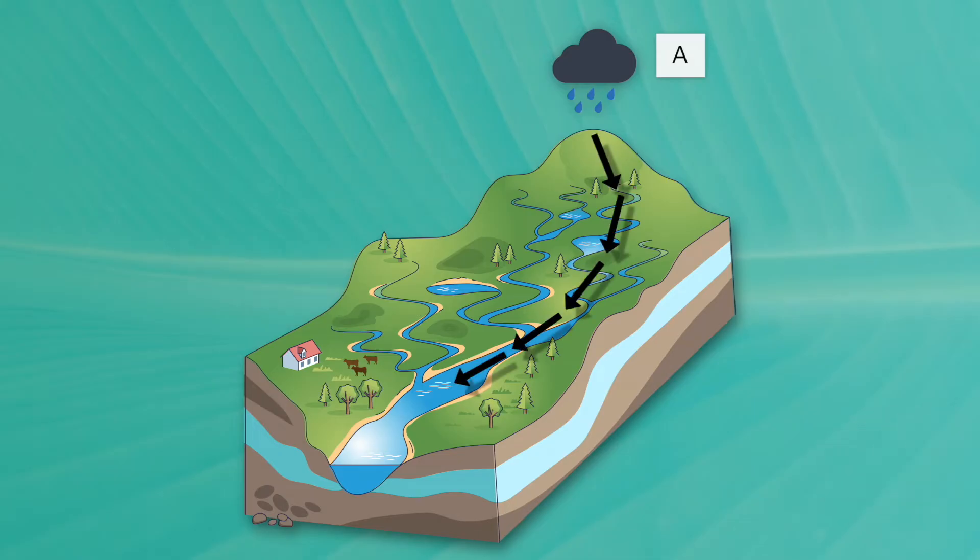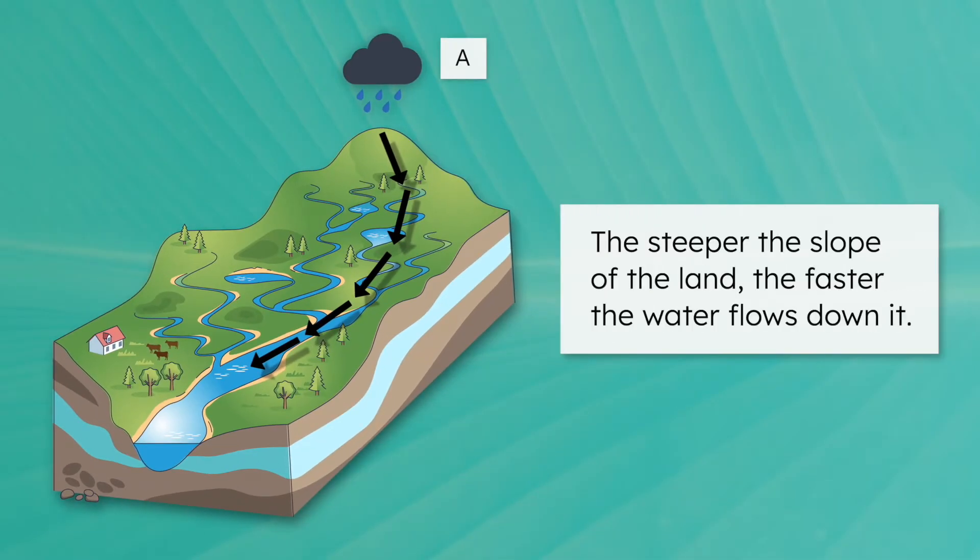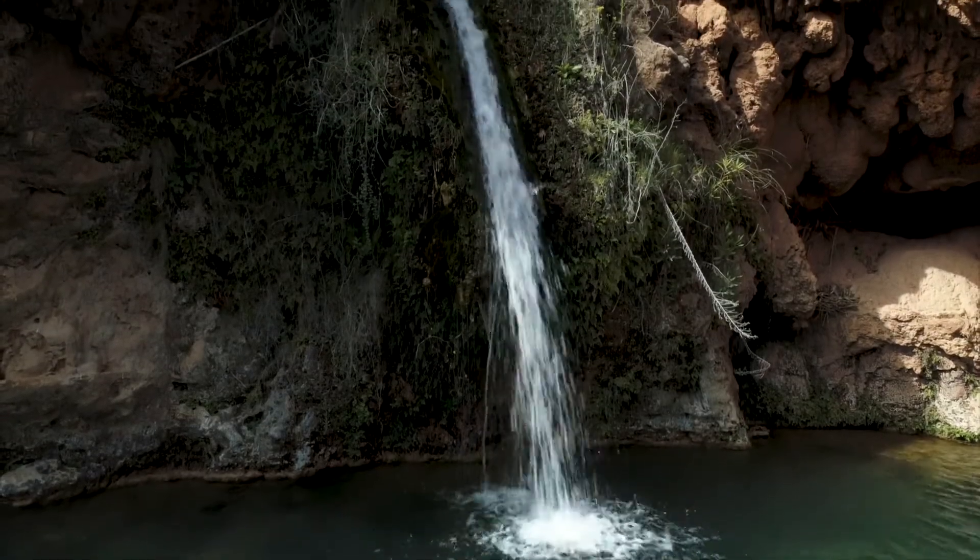You might have predicted that the water at location A would flow down the hill. The slope of the land is a big factor that impacts how water moves in a watershed. The steeper the slope of the land, the faster the water flows down it. You can see this when water slowly trickles over a flat area, but roars and rushes down a steep waterfall.